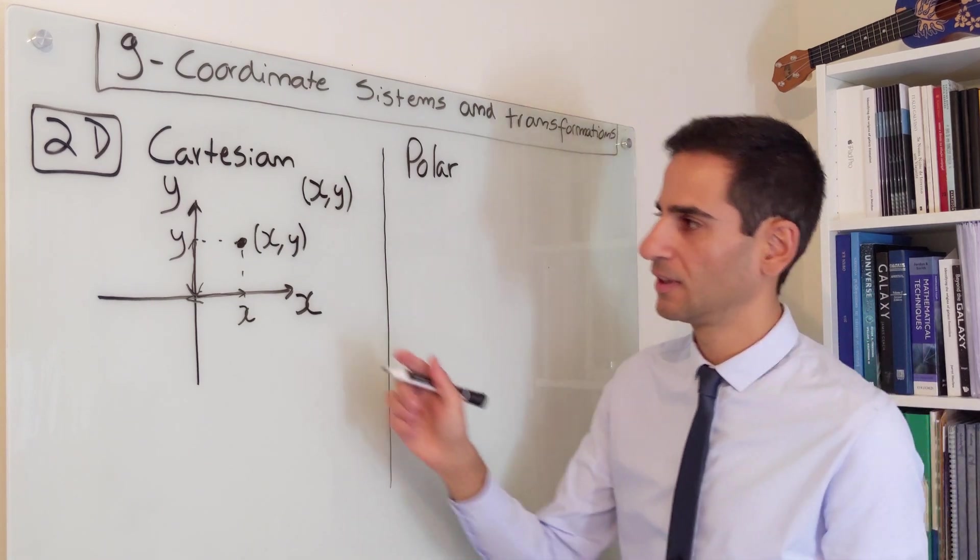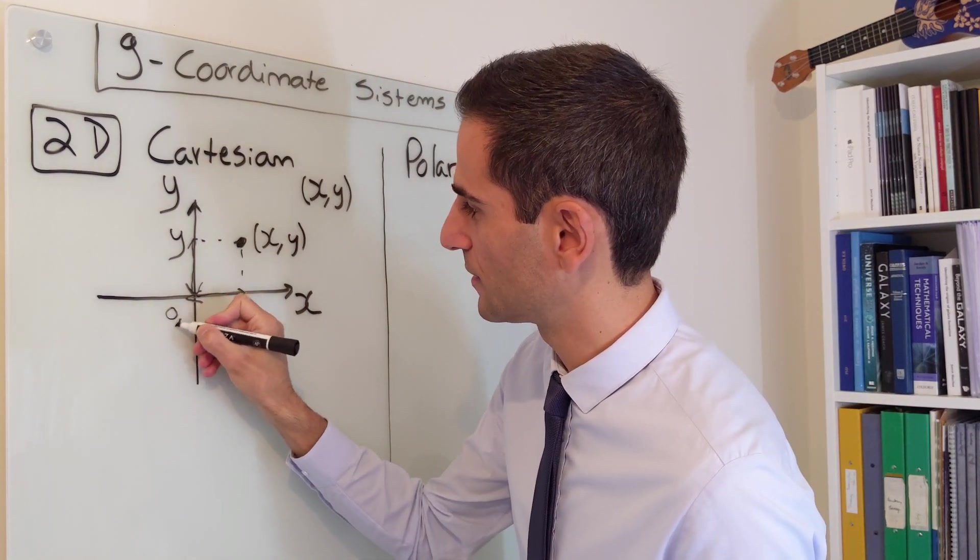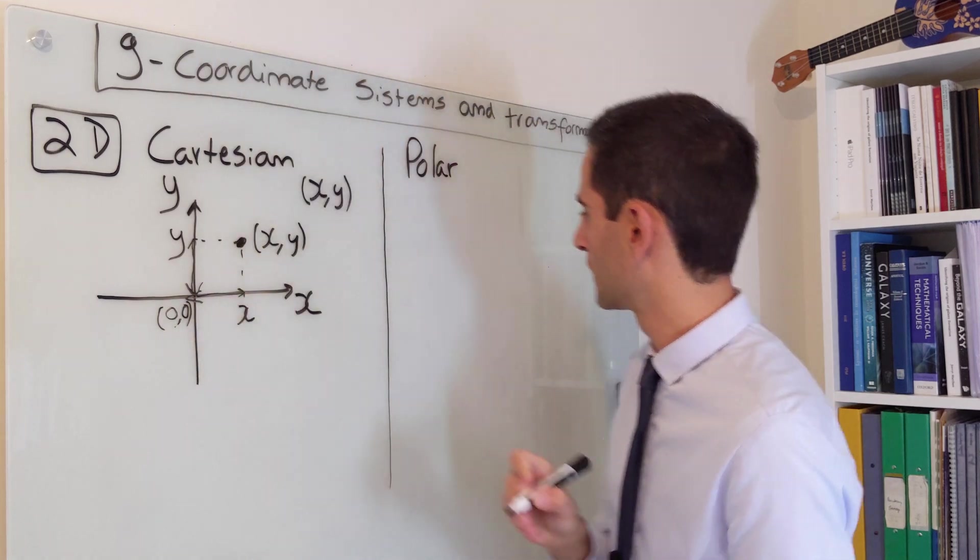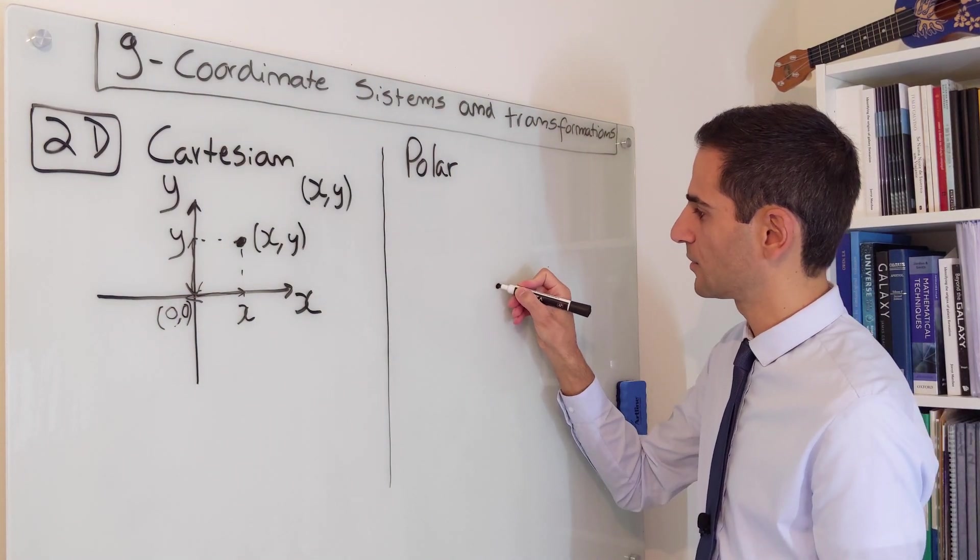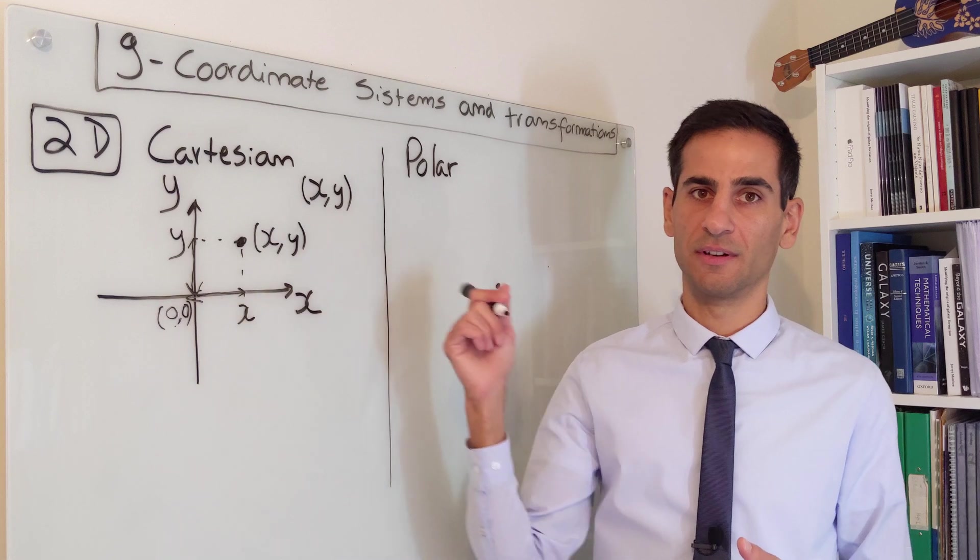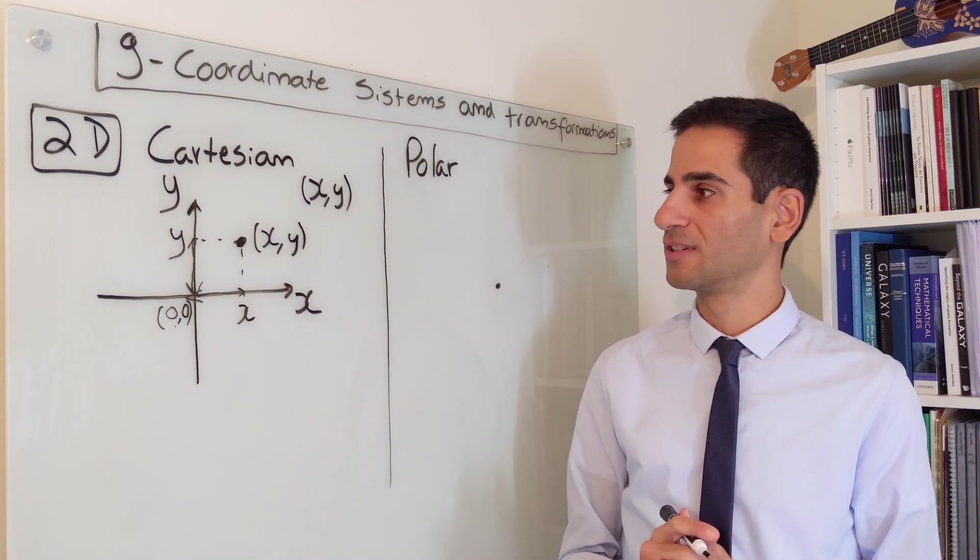Polar coordinates are different. Just like here, there is a 0,0. Polar coordinates also have an origin. This is the origin of both coordinate systems.